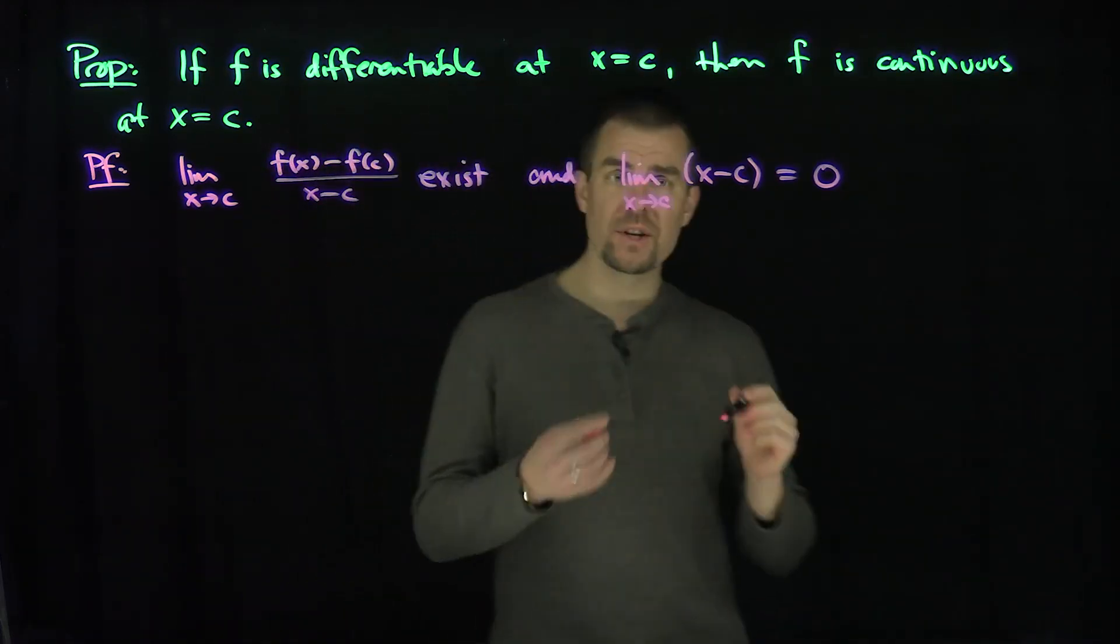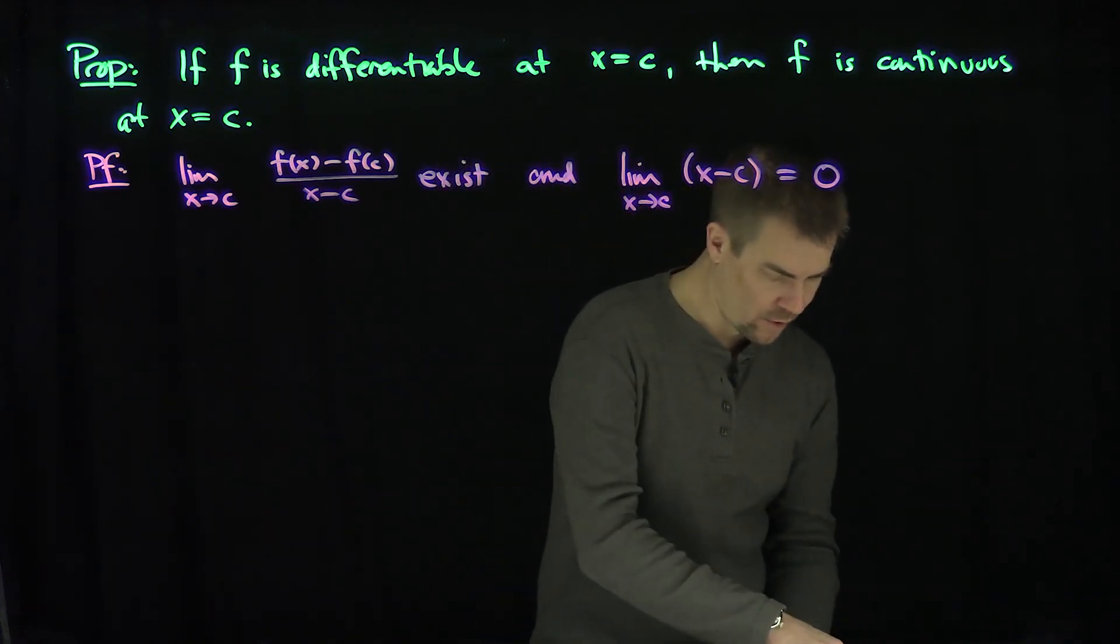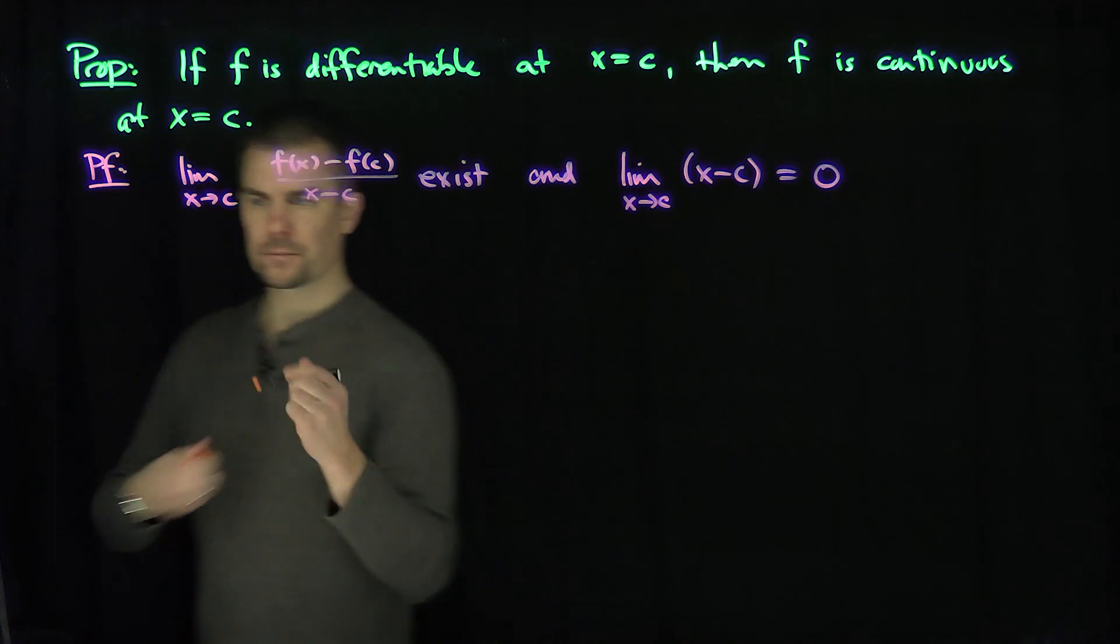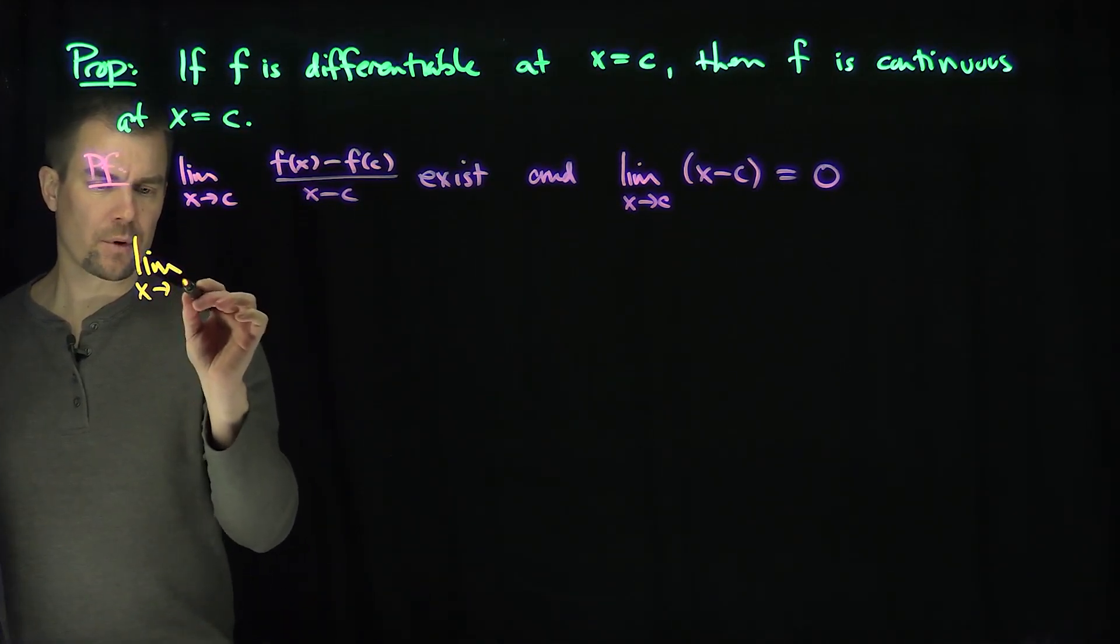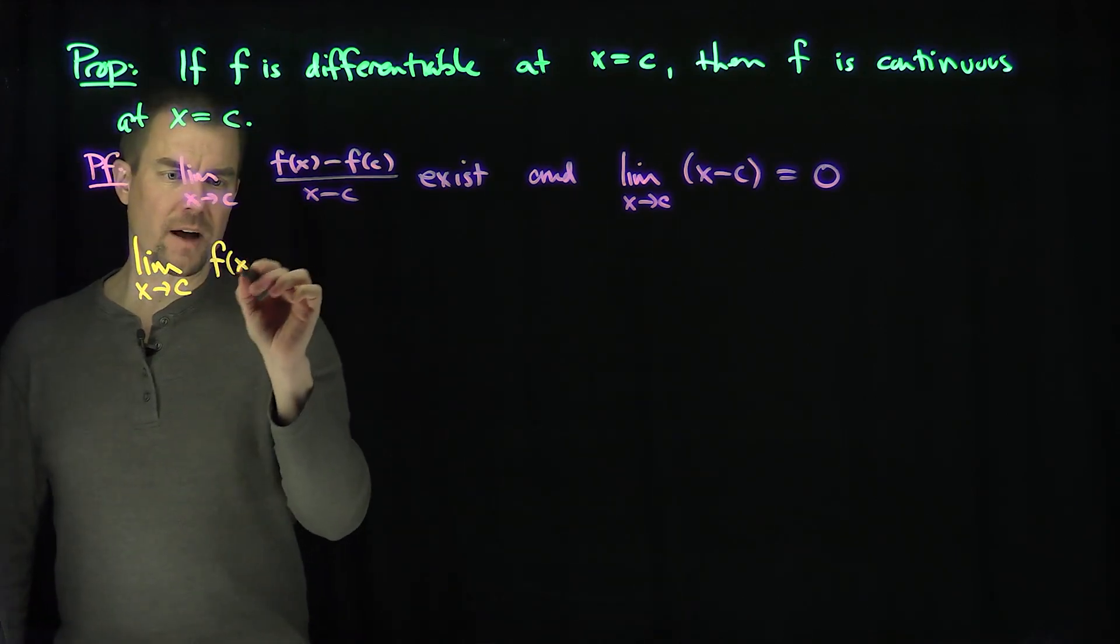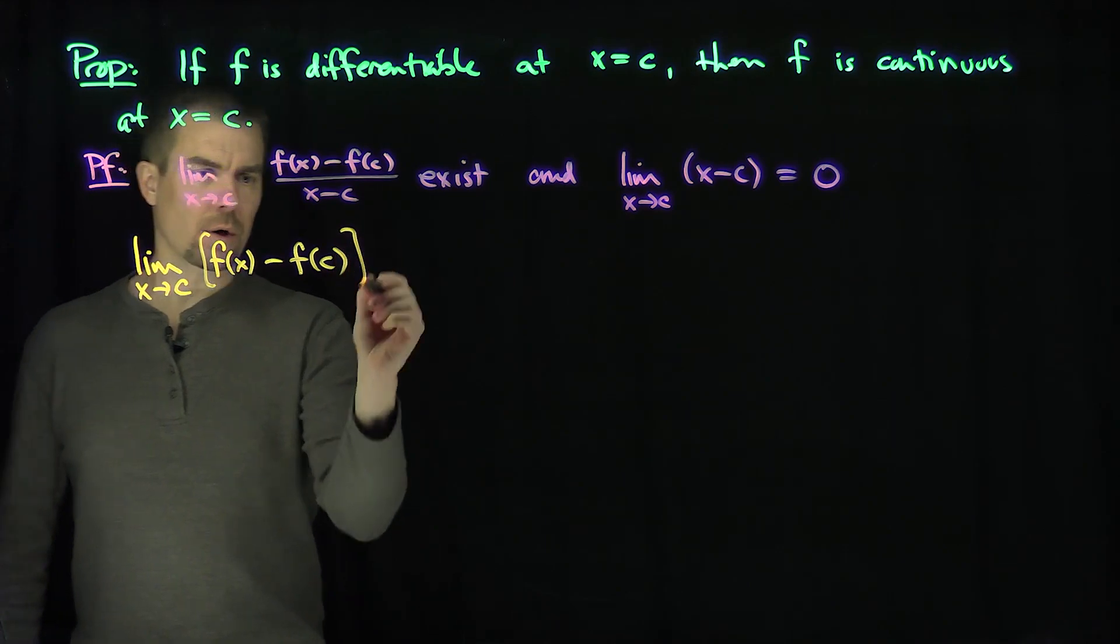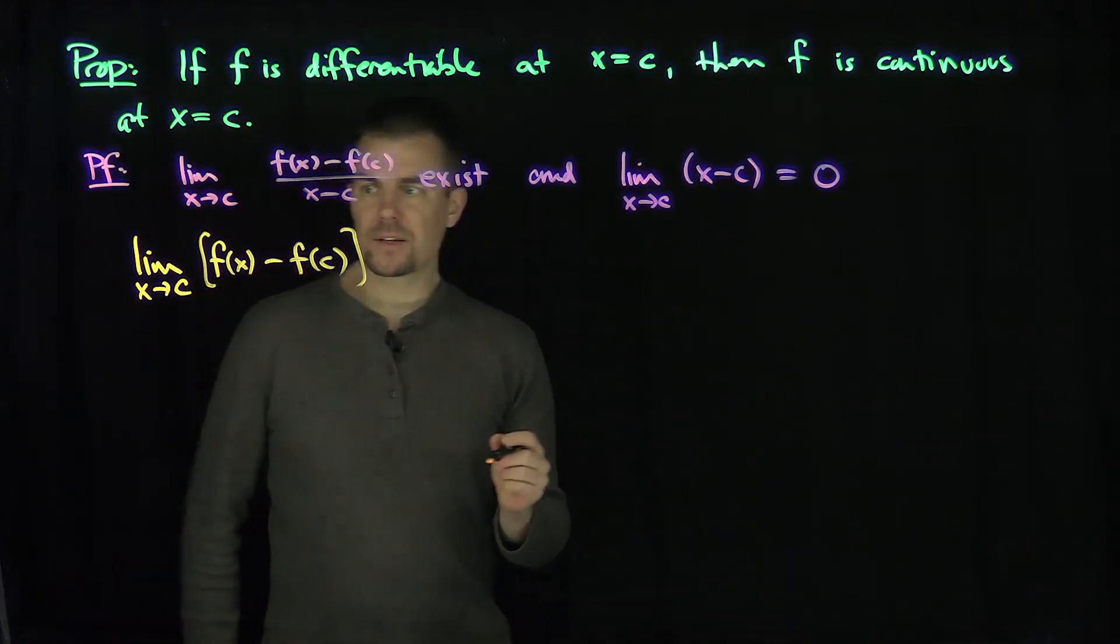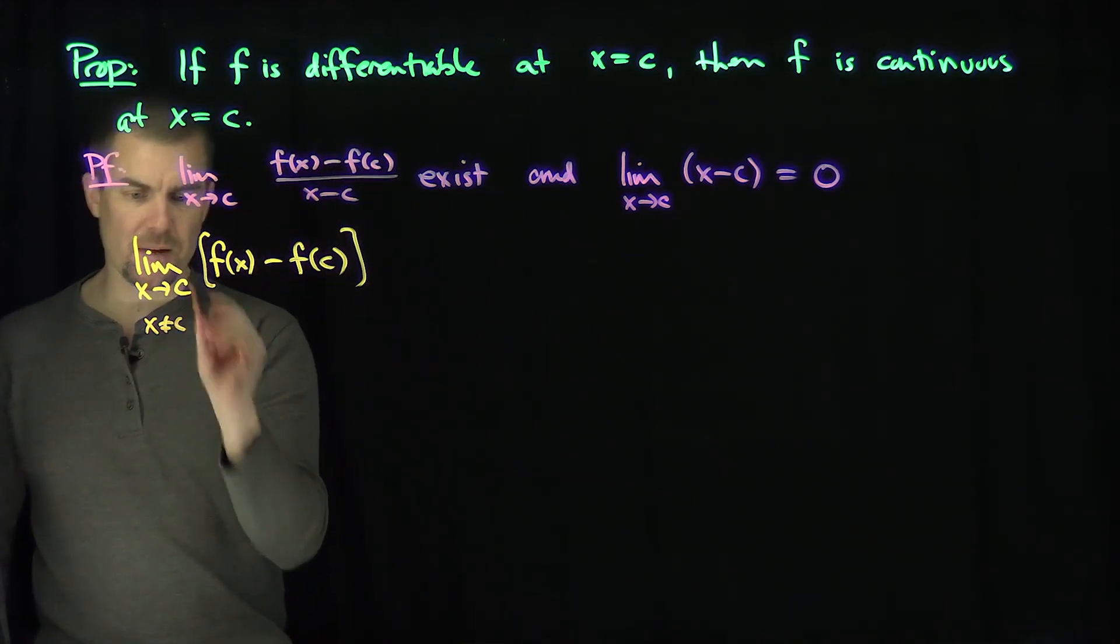And so I'm going to use these two things together. So these two limits exist individually. Therefore, what we can do is the following. Let's consider the limit as x approaches c of f(x) minus f(c). I would like to show this limit goes to zero. What this is, since now we're assuming when you're doing a limit as x goes to c, we're assuming that x is not equal to c.